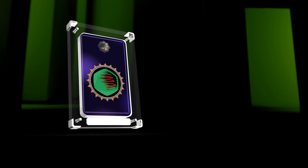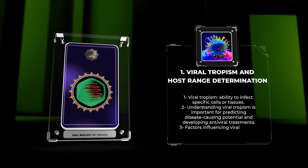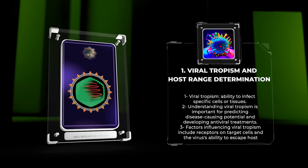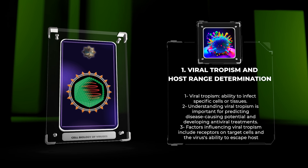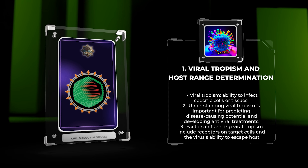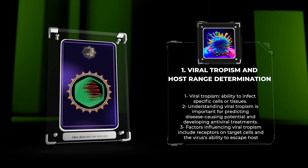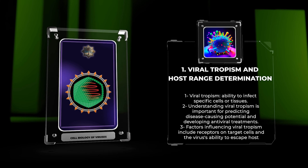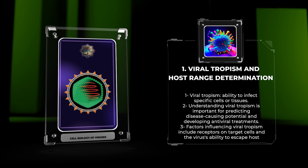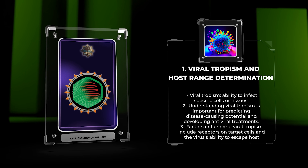Viral tropism refers to a virus's ability to infect specific cells or tissues in a host organism. It is important for understanding a virus's range of hosts and predicting its disease-causing potential. Factors such as receptors on target cells, cellular factors needed for viral replication, and the virus's ability to escape host defenses influence tropism. Studying tropism sheds light on disease mechanisms and aids in developing antiviral treatments and vaccines.